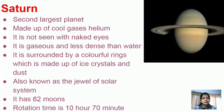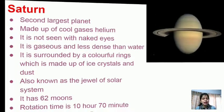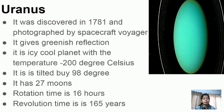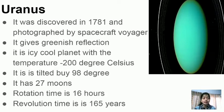Uranus was discovered in 1781 and photographed by spacecraft Voyager. It has a greenish reflection and is an icy, cool planet with a temperature of minus 200°C, because it is very far from the Sun. It has 27 moons. Rotation time is 16 hours and revolution time is 84 years. Seasons on Uranus last about 20 years each.